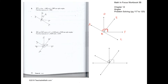We need to find angle FBC. This angle DBE is given as 26 degrees. Since angle DBF is a right angle, and angle DBE is 26 degrees, therefore angle EBF has to be 90 minus 26, which is 64 degrees.